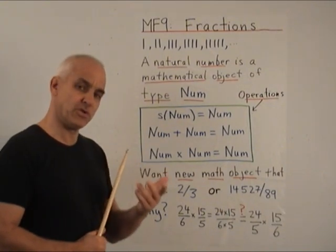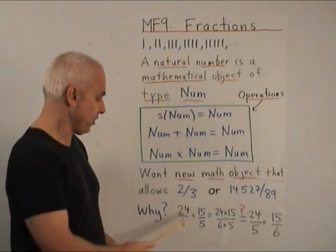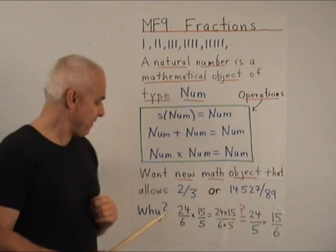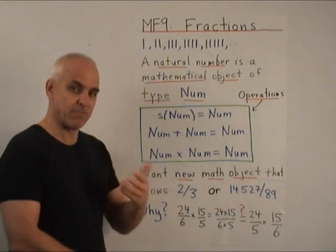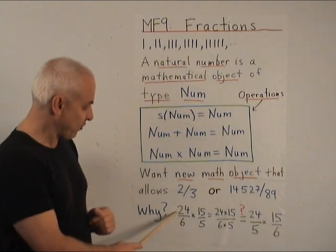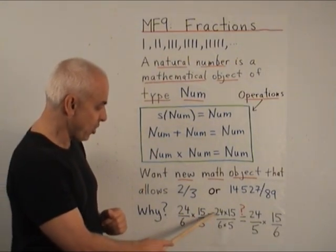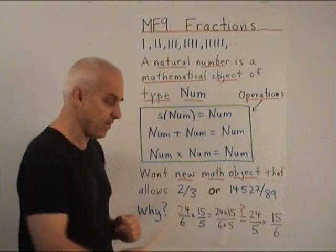We want to introduce new objects called fractions like two-thirds or this one here. And we want to do this for a number of reasons. First of all, we want to be able to do arithmetic smoothly. So when we have 24 divided by 6 times 15 divided by 5, we know we can rewrite that as 24 times 15 divided by 6 times 5.